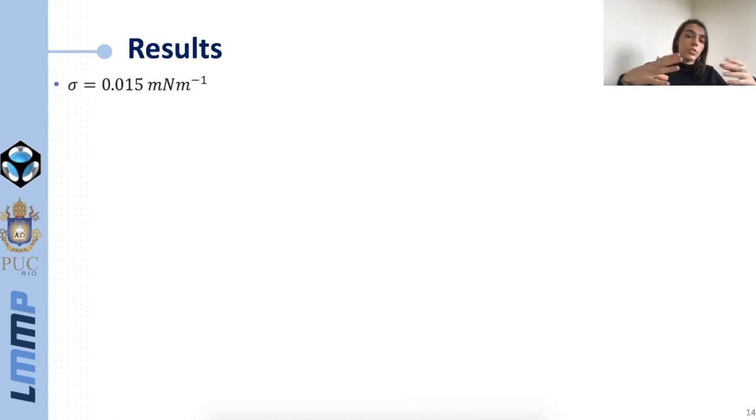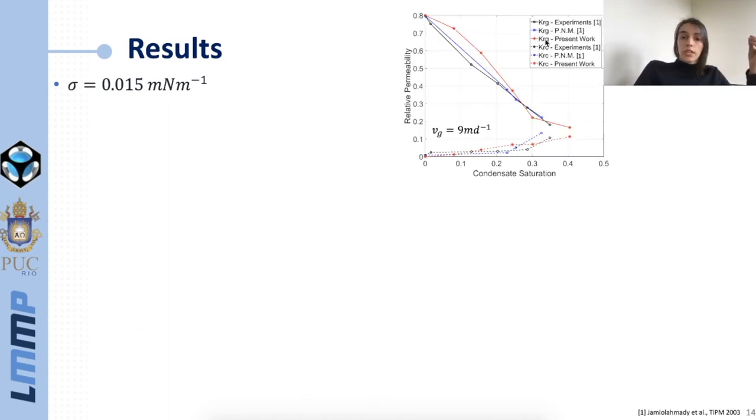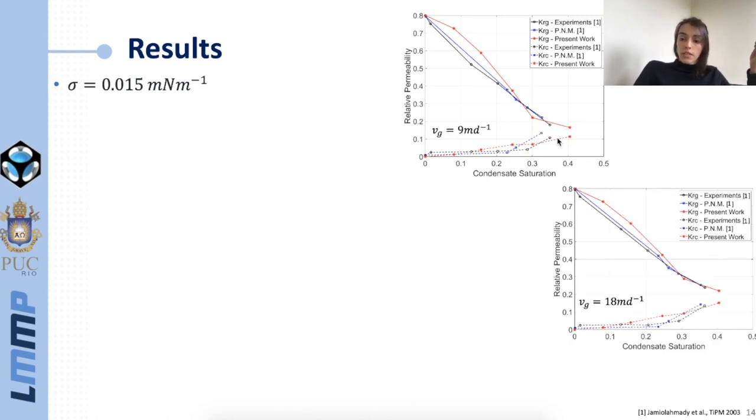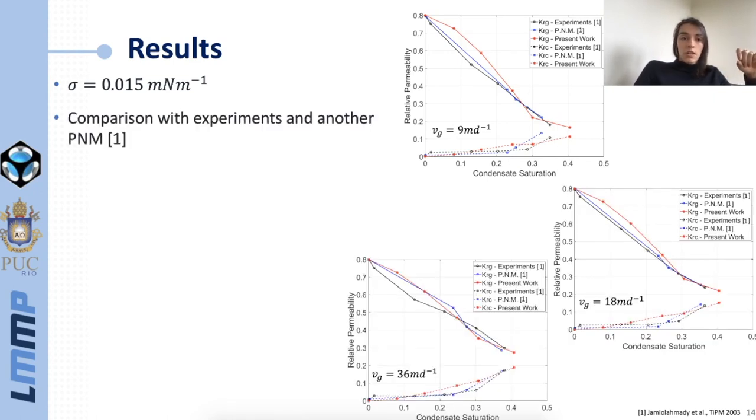Now I present the first set of results obtained with the lowest interfacial tension. Here are the curves for the gas flowing velocity of 9 meters per day, here 18, and here 36. In those curves the results obtained with our model are in red, the experimental results in black, and the results from a different pore network model that I found in the literature in blue. The first thing we can see by comparing those images is that the positive effect of velocity was well represented. If we compare this case here with the lowest flowing velocity with this one with the highest flowing velocity we can see that the curves shift upwards and the model curves have shifted by the same amount as the experimental curves.